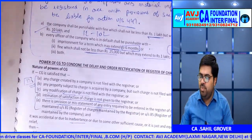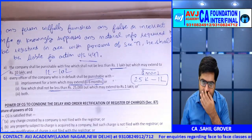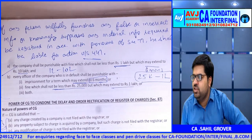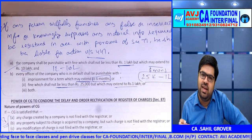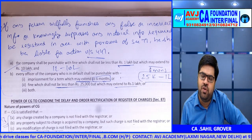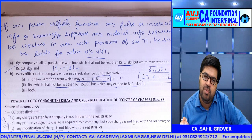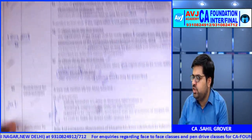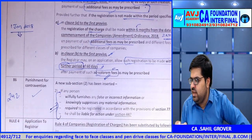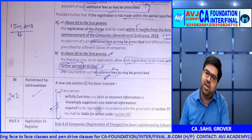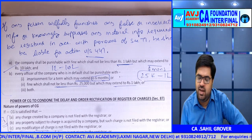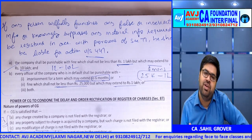Section 86: punishment for contravention of Sections 77 to 85. Company faces a fine of ₹1 lakh to ₹10 lakhs. Officer in default faces up to 6 months imprisonment plus fine of ₹25,000 to ₹1 lakh. An amendment has been added: if a person willfully furnishes false or incorrect information, or knowingly suppresses any information required to be registered under Section 77, with intent to defraud, that person shall also be liable under Section 447 of Companies Act 2013.